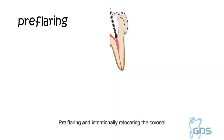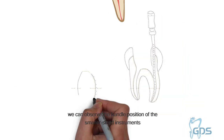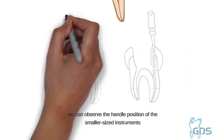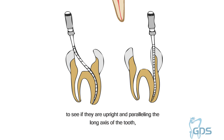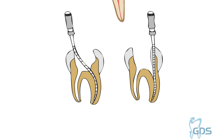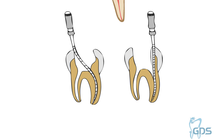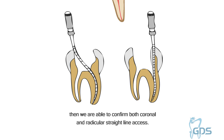Pre-flaring and intentionally relocating the coronal one-third of the canal is a static decision. We can observe the handle position of the smaller size instrument to see if they are upright and paralleling the long axis of the tooth, or if they are off-axis. When the handle of the file is upright or on the long axis of the tooth, then we are able to confirm both the coronal and radicular straight line access.